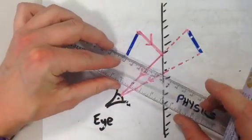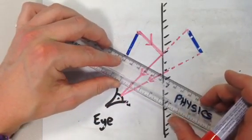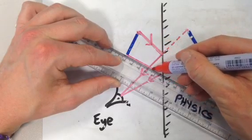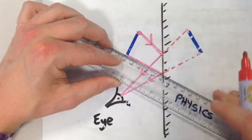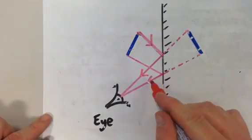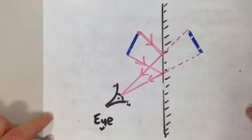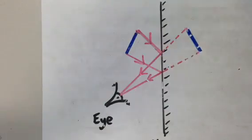We can then repeat that process from the bottom of the candle. So a ray of light has bounced off the candle, coming towards the mirror, hits the mirror, bounces off, and into the observer's eye. And we put an arrow on there again to represent the direction that the light ray travels.